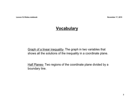Pause the video here a second and write these two vocab words down in your student journal. The first one is the graph of a linear inequality — that's what we're working with today. That's the graph with two variables that shows all the solutions of the inequality. The second vocab word is a half plane, which is the two regions that the line we're going to graph today will split our coordinate plane into. It's divided by what we call a boundary line.